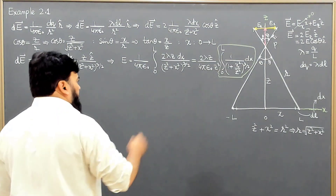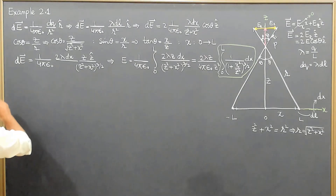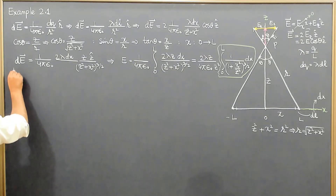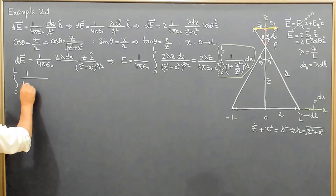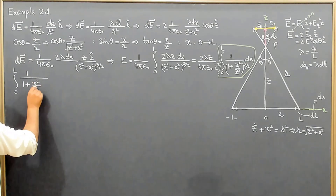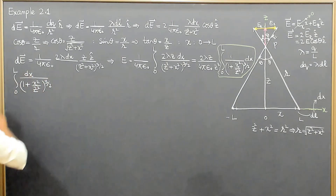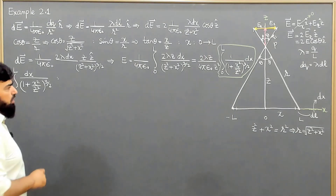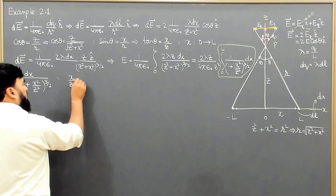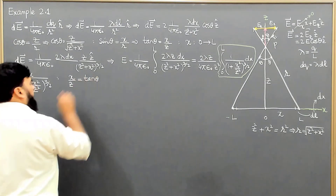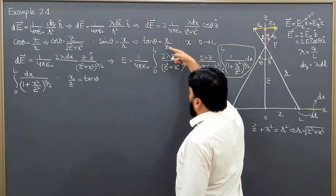Now putting all this together, we will solve this integral: the integral from 0 to L of 1 over (1 + x²/z²)^(3/2) dx. We do some substitution in order to simplify this integral. Let us say x/z is equal to tan θ, and I know from this that tan θ equals x/z.